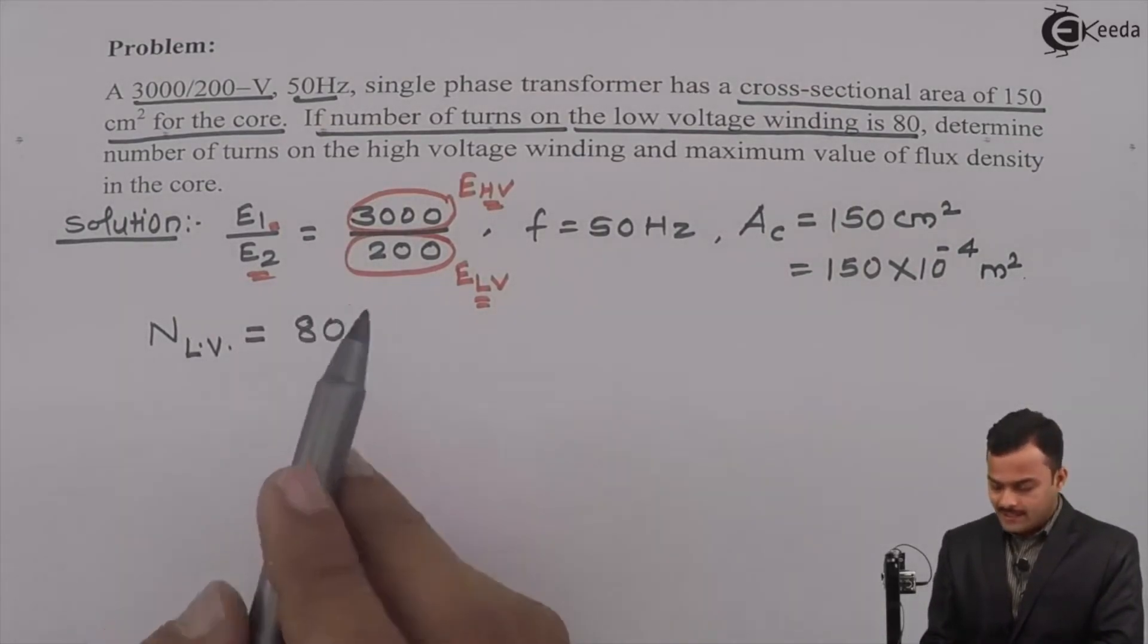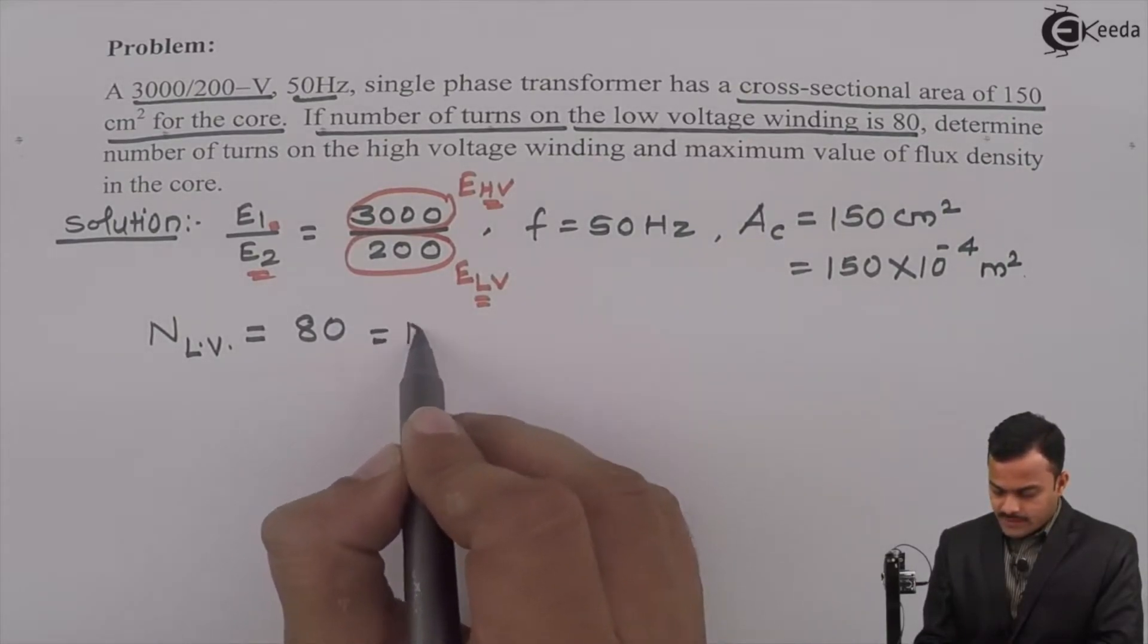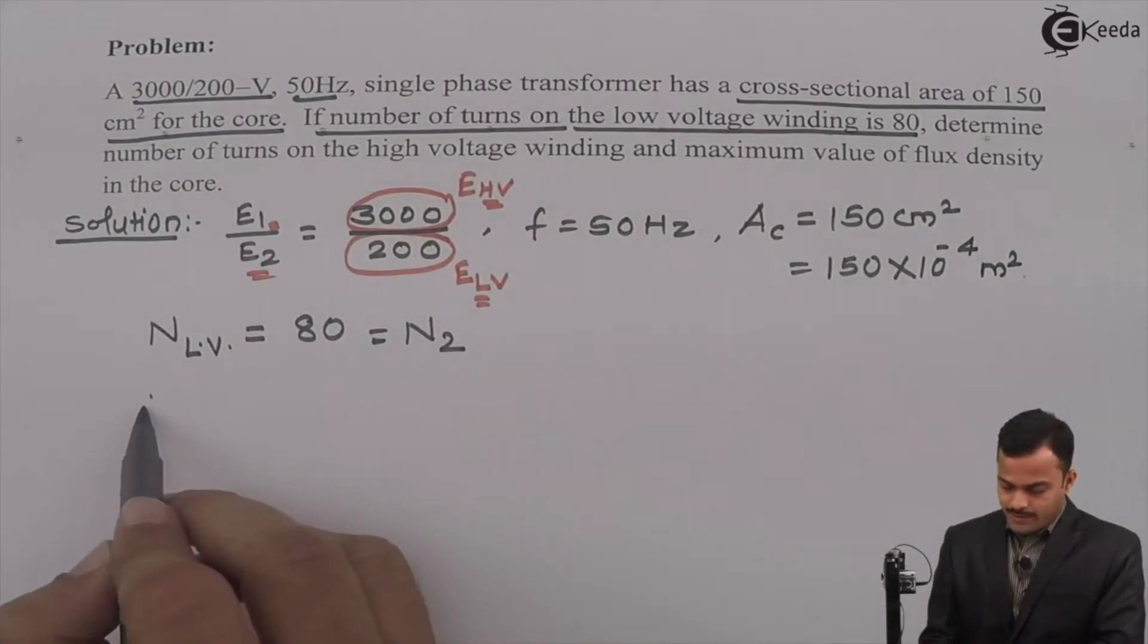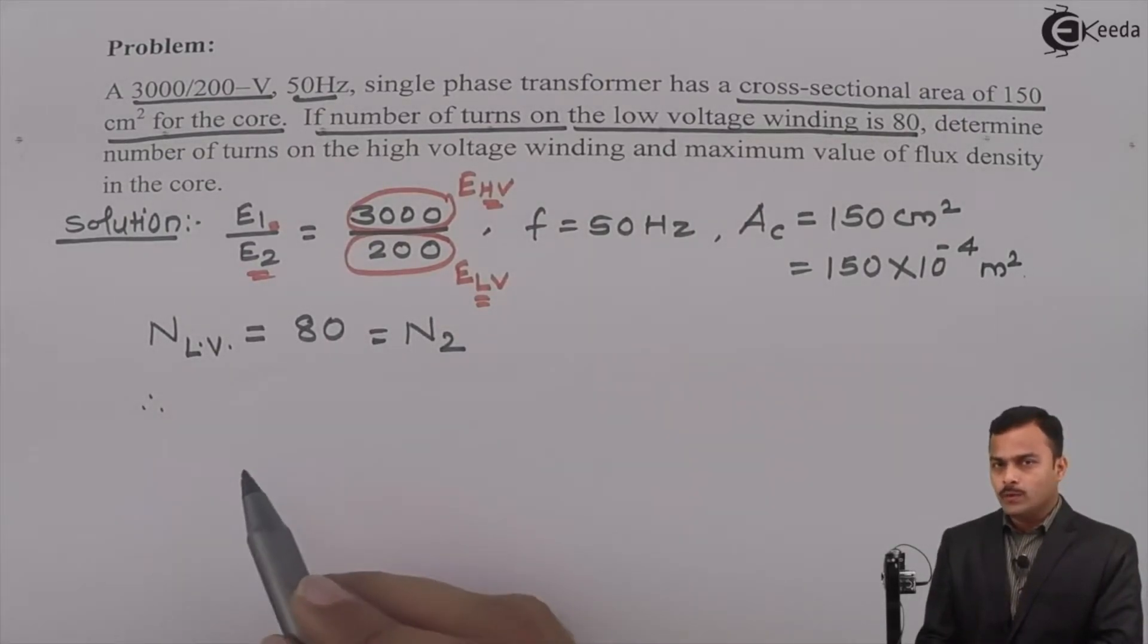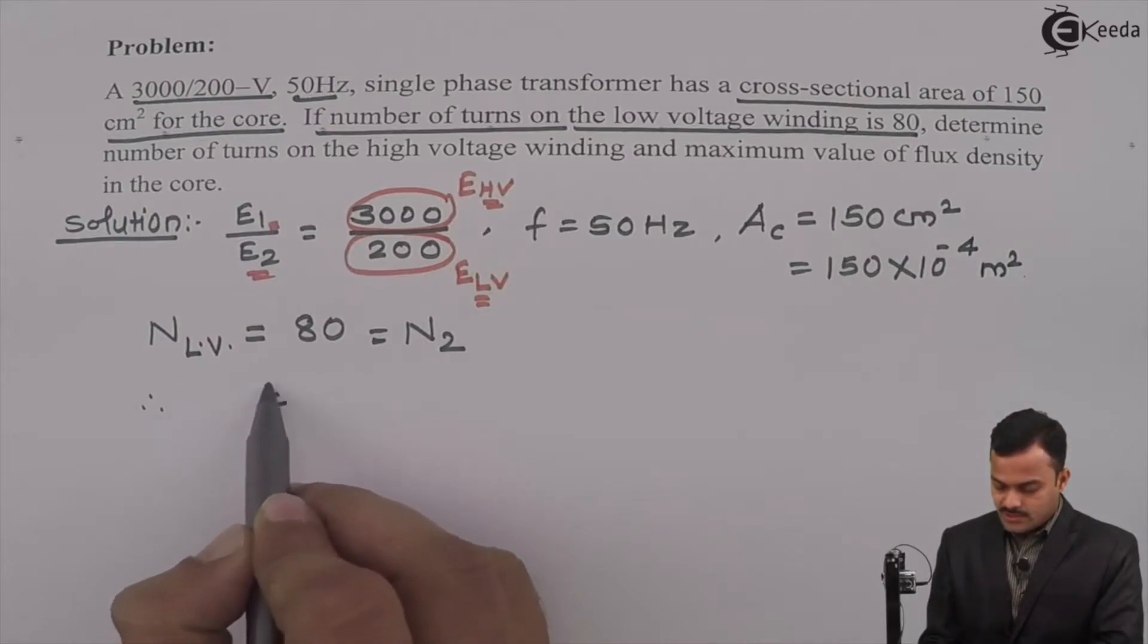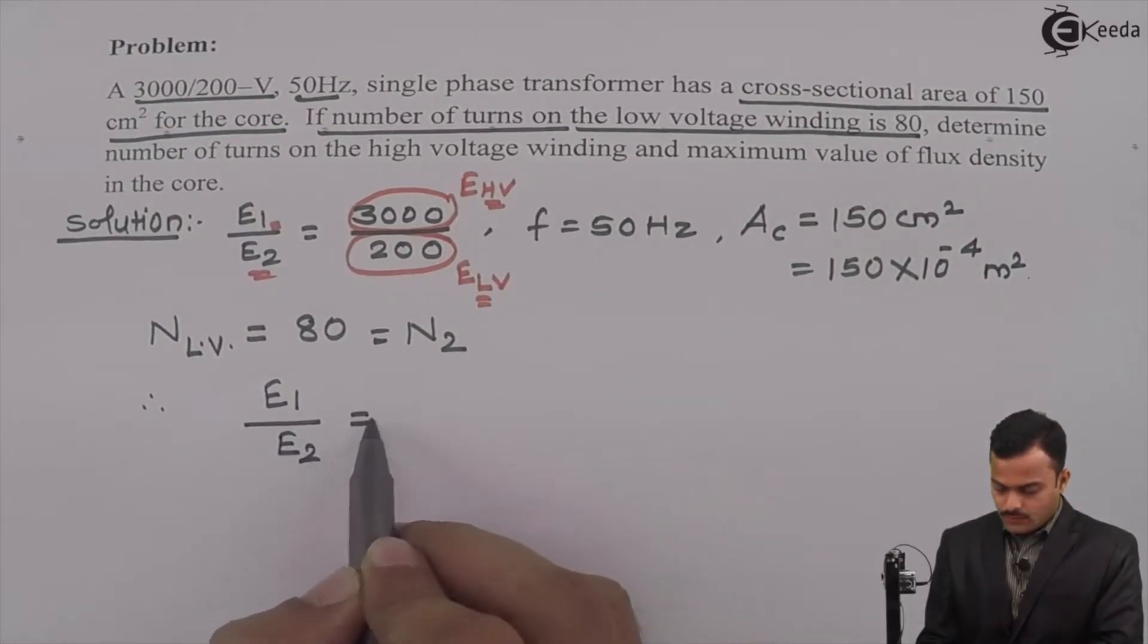Now instead of N low voltage side, I can say it is number of secondary turns N2. Now I can say, how to get N1 or number of turns on high voltage side? Simply I will use this relationship: E1 by E2 equals N1 by N2.